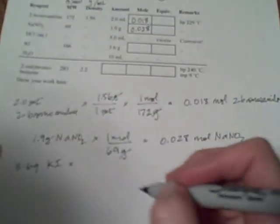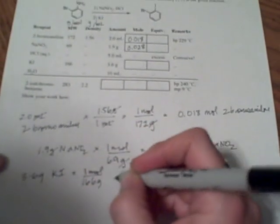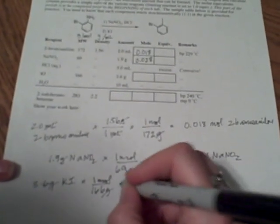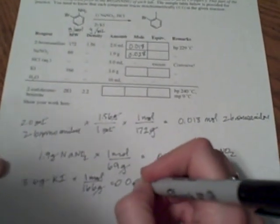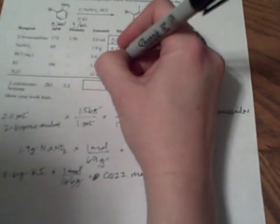And we could do the same for KI. We use 3.6 grams of KI, potassium iodide, and we know there's 166 grams of that for every one mole. So our grams cancel and we get 0.022 moles of KI. So 0.022. So that's how we're going to calculate the moles of each species that we have.